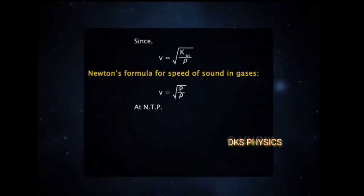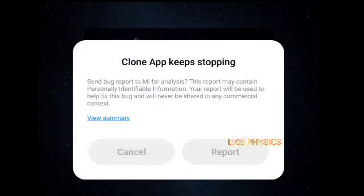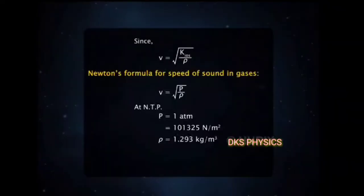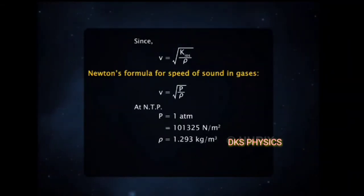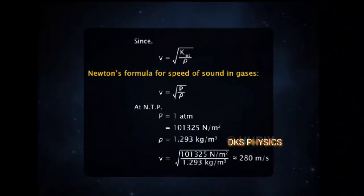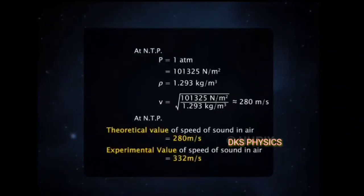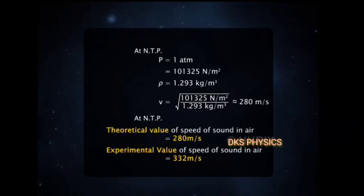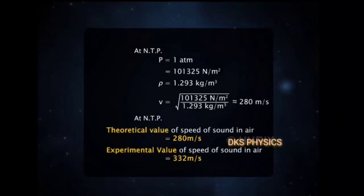At NTP, pressure equals 1 atmosphere and the density of air is 1.293 kg/m³. Using these values in Newton's formula, the speed of sound in air comes out to be 280 m/s. However, from experiments, the speed of sound in air at NTP was estimated to be 332 m/s. This large difference in the two values raised questions about Newton's formula.